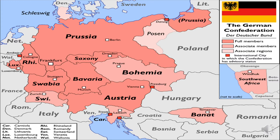The most important thing to notice is that the capital of Prussia was Berlin, and the most important states were Prussia and Austria.